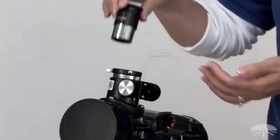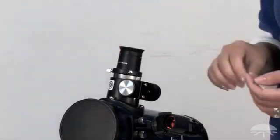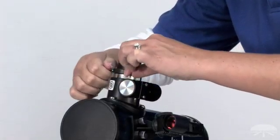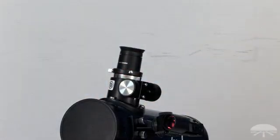Chrome side down. It goes into the focuser. Simply tighten the screws. You are now ready to use your Fun Scope.